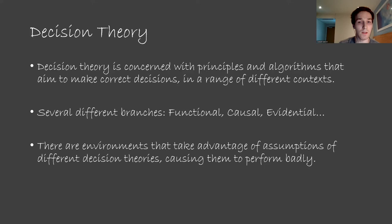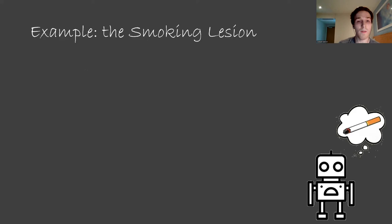You might think this sounds a lot like reinforcement learning. The main difference is that in reinforcement learning, we don't know how the environment works and must figure this out as we go. Decision theory includes problems like this, but also other problems. For example, cases where we might know how the environment works and we have to plan using this information to perform well. To get a flavor for different decision theories, we'll talk about an example where evidential decision theory recommends a different behavior to functional and causal decision theory. This example is called the smoking lesion.